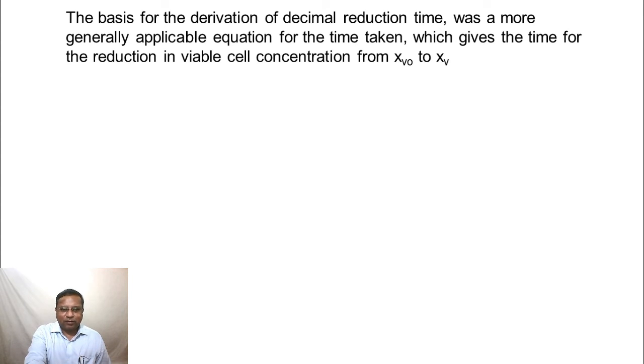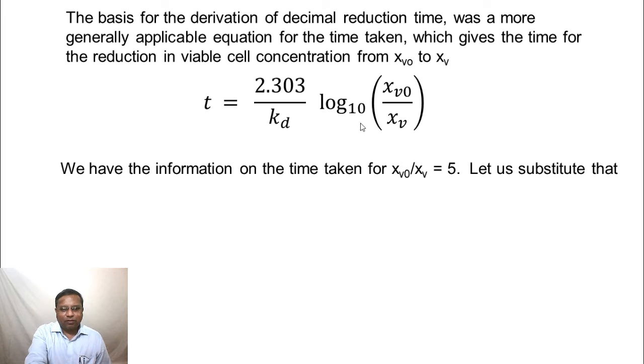We went through it during the review process. This gives the time for the reduction in viable cell concentration from xv0 to xv. We had derived the time to be t equals 2.303 by kd log to the base 10 of xv0 by xv. We have the information on the time taken for xv0 by xv to be 5. In other words, a 5-fold reduction from 100% to 20%. So if we substitute here, in other words, this becomes 5. We need 5 minutes or 300 seconds for a 5-fold reduction. Therefore, 300 equals 2.303 by kd log 5 to the base 10.